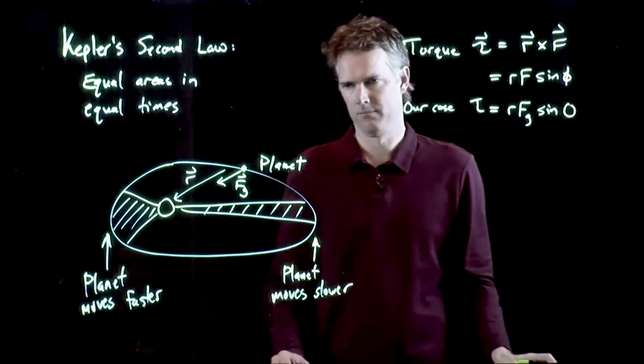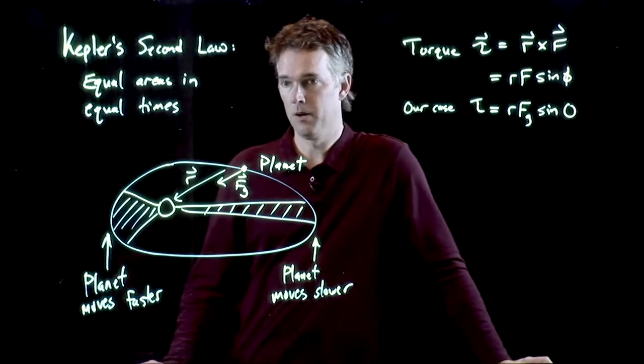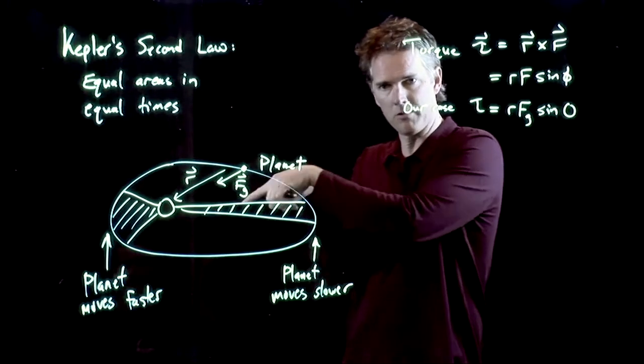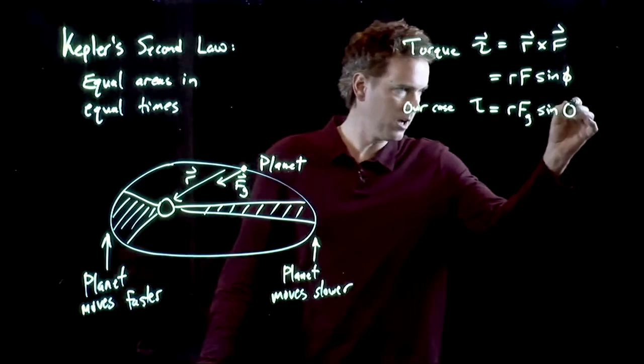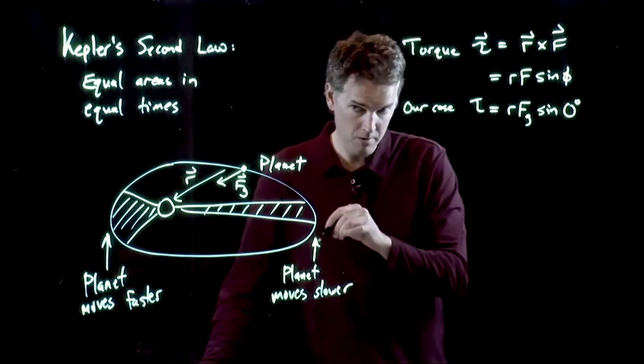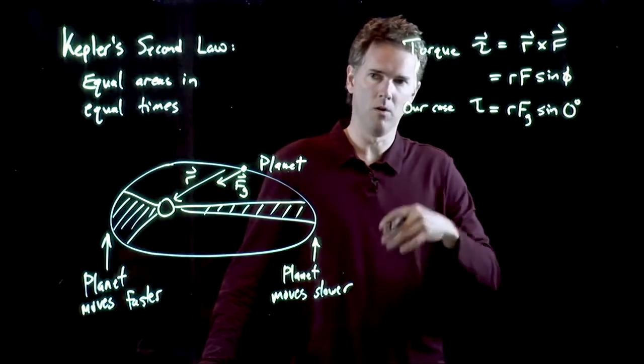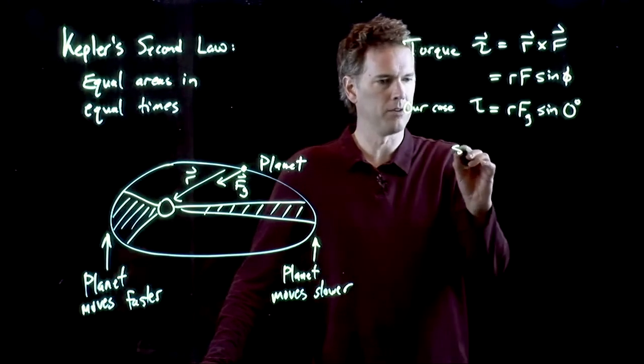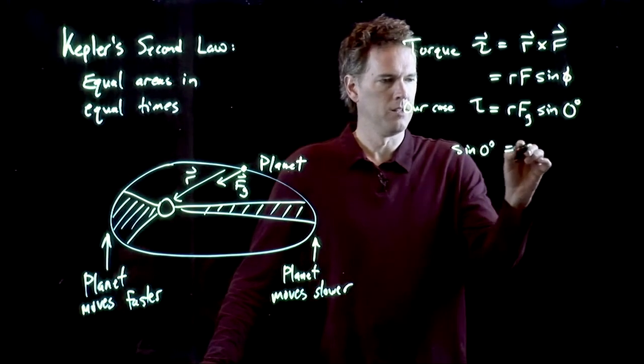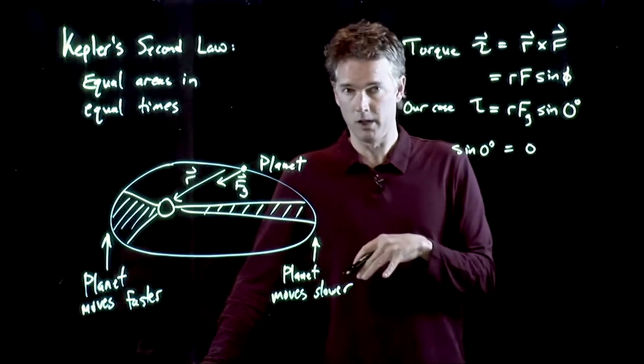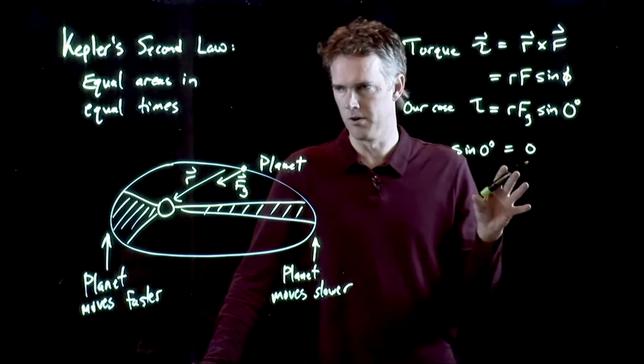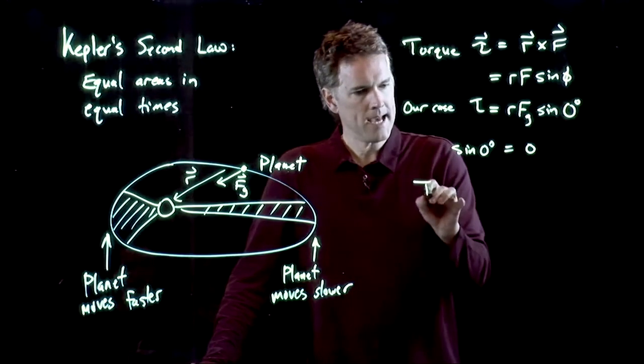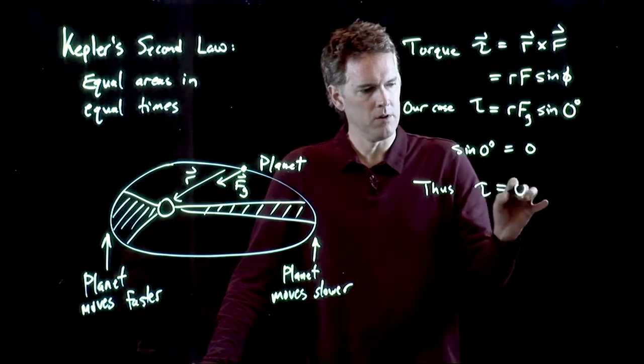Zero. Zero. Why? Because they're parallel, right? Anytime you have two vectors that are parallel, the angle between them is zero. Is the sine of zero zero? Or is the sine of zero one? Or is it something else? Zero. Zero. Sine of zero degrees is zero. Again, you can go back to the unit circle and convince yourself that, yeah, it's zero.